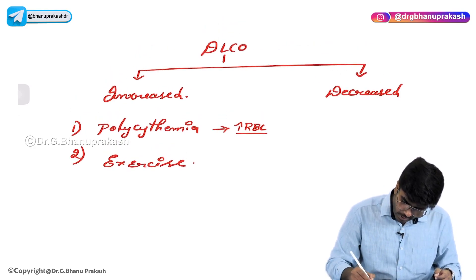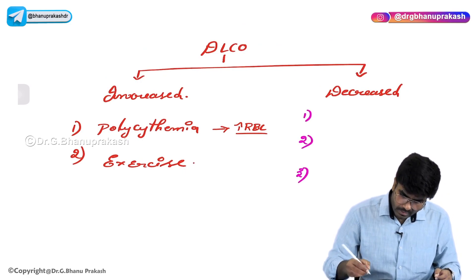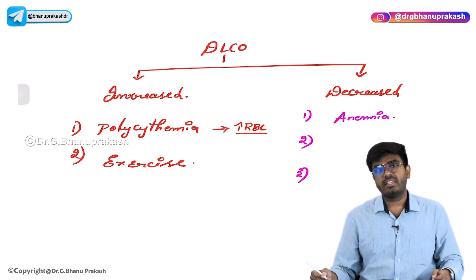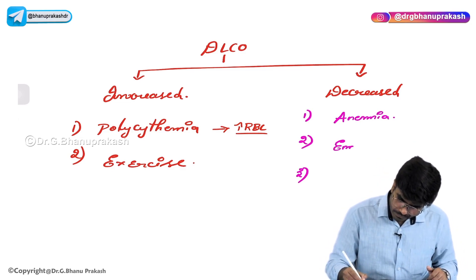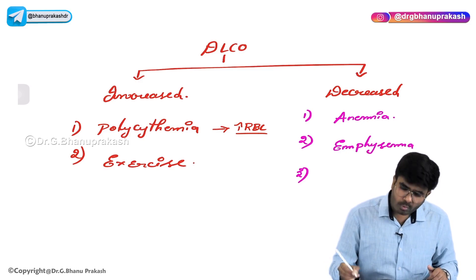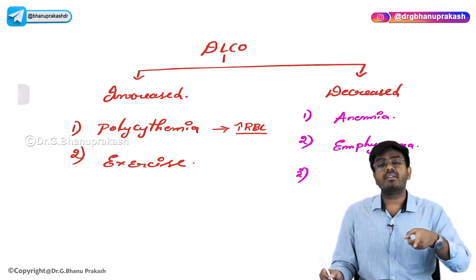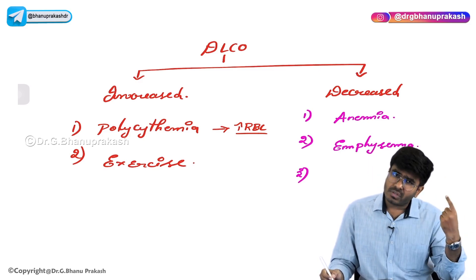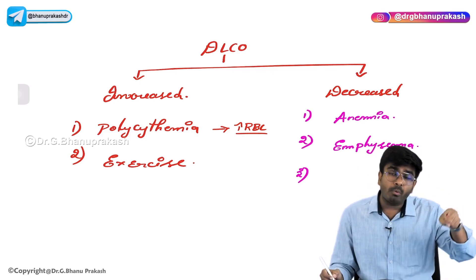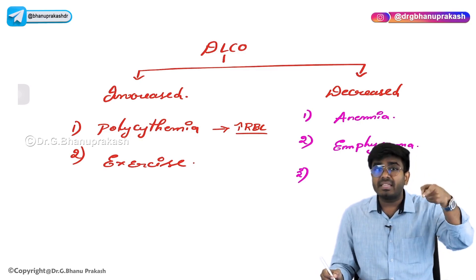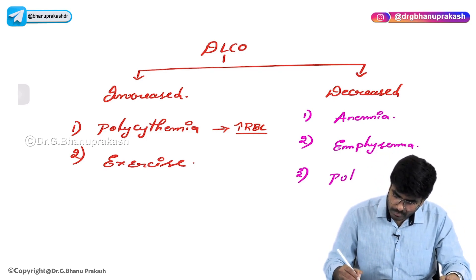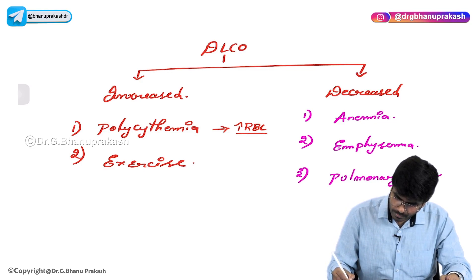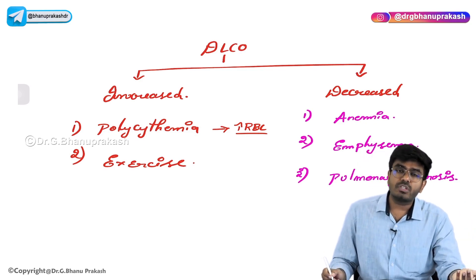Now let's talk about conditions where DLCO is decreased. Three important conditions: first, anemia - just opposite to polycythemia, if fewer RBCs are going to the lungs, less diffusion will happen. Second, emphysema - surface area decreases, so diffusion of all gases decreases because the amount of respiratory membrane helping in exchange of gases is affected due to alpha-1 antitrypsin deficiency. Third, pulmonary fibrosis - the thickness of the membrane increases, so automatically diffusion of gases decreases.